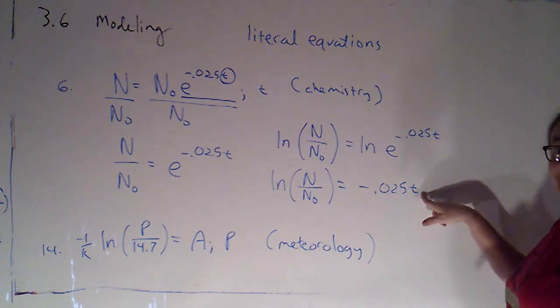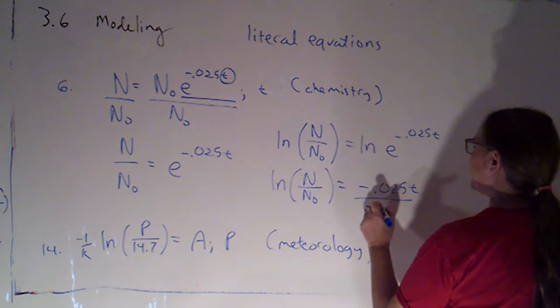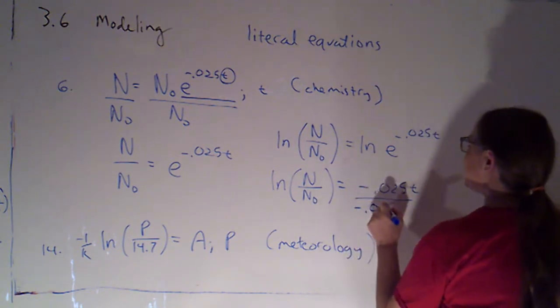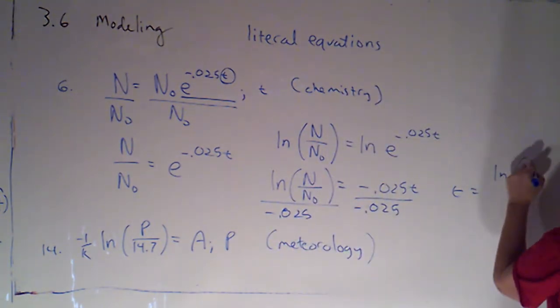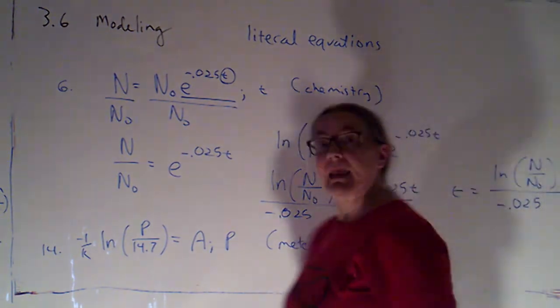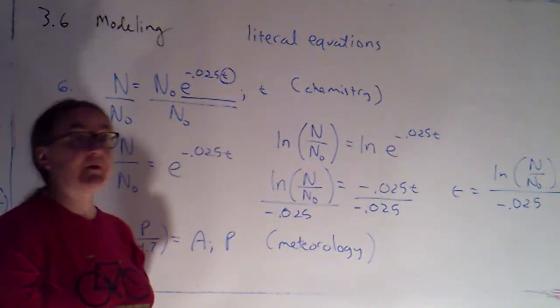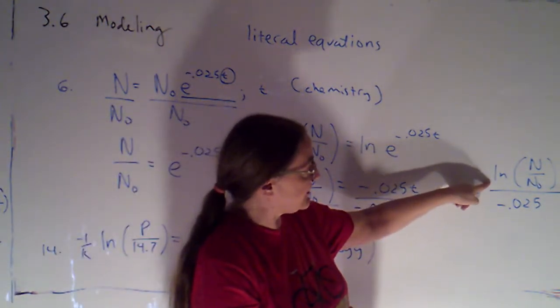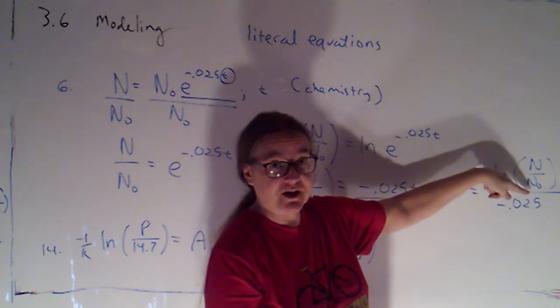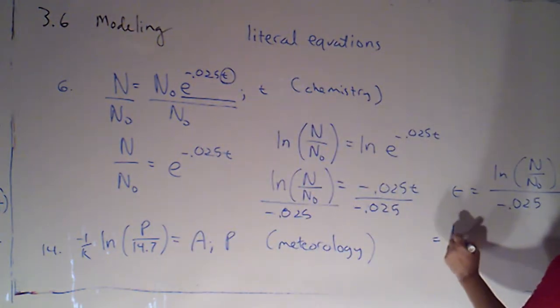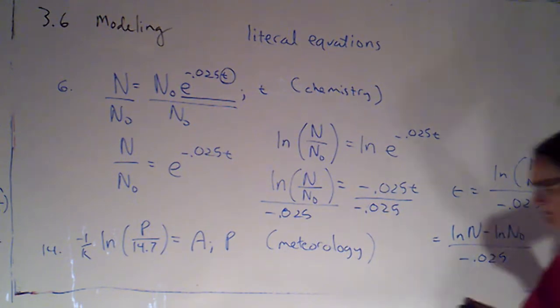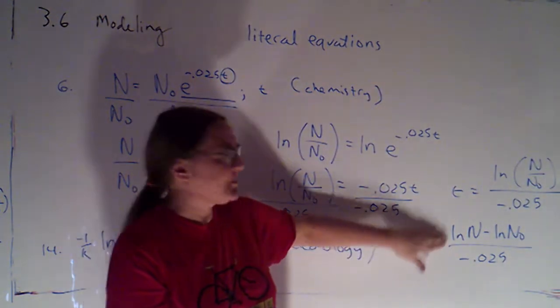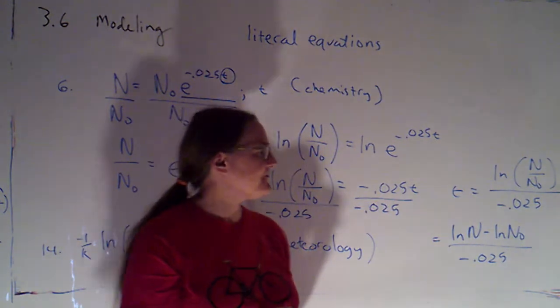I want to know what t is. I'm multiplying it by negative 0.025. So let's divide both sides by negative 0.025. So we would have t is the natural log of n over n naught, all over negative 0.025. And I would say that's probably the simplest form. If I wanted to, I could observe that because that's the natural log of a quotient, I could rewrite that as the natural log of n minus the natural log of n naught over negative 0.025. I don't know that that's necessarily any simpler, but either of those would be considered an acceptable answer.